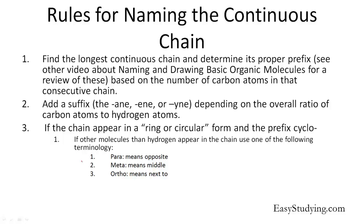Rules for naming the continuous chain: we find the longest continuous chain and determine the proper prefix. These prefixes are based on the number of carbon atoms in the consecutive chain — meaning the longest continuous chain in the carbon structure. Afterwards, we determine what suffix it needs: either -ane, -ene, or -yne, depending on whether it's an alkane, alkene, or alkyne group, determined by the number of bonds.